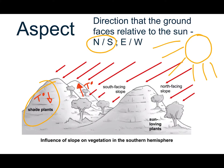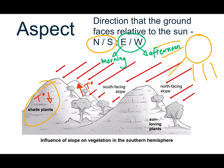Another interesting thing is whether a slope faces east or west. You know that the sun rises in the east, so an east-facing slope is going to get sun in the morning but shade in the afternoon. On the west slopes, because the sun sets in the west, you're going to get a lot of afternoon sunshine, so they're going to be really hot in the afternoon. That's also going to have an influence on what plants and animals are going to want to live there. It has less of an influence than the north or south slope, but it certainly does play a role.